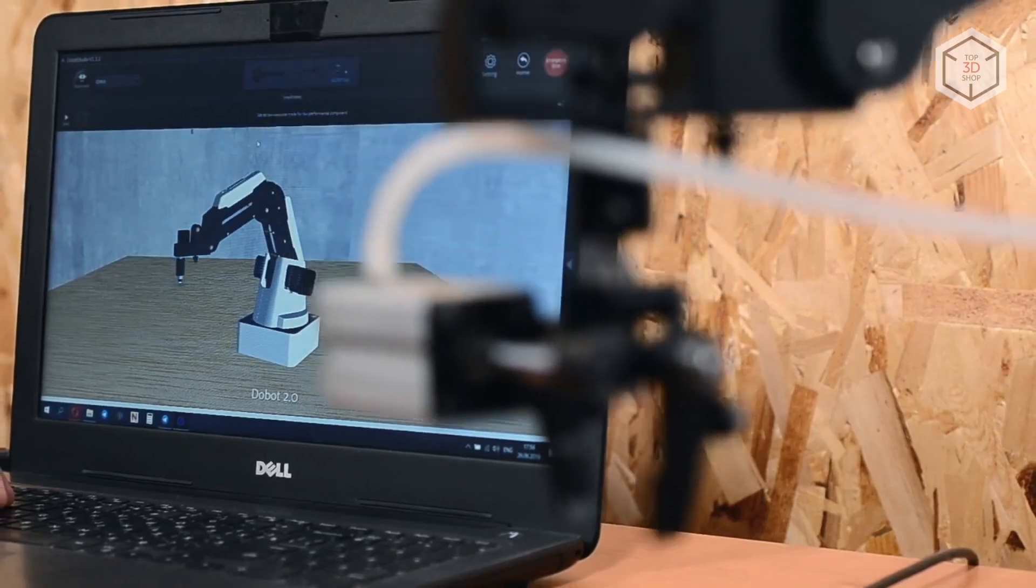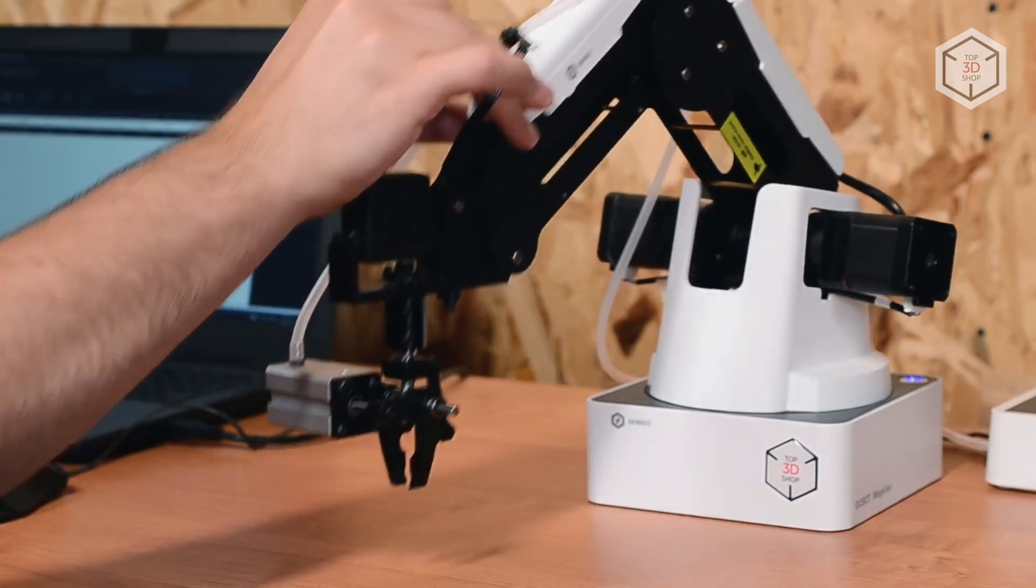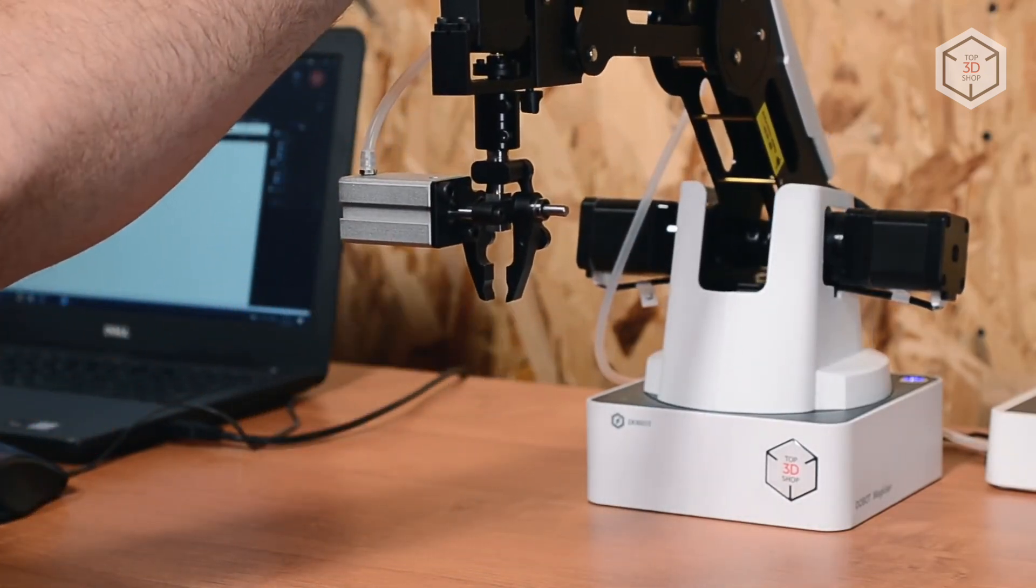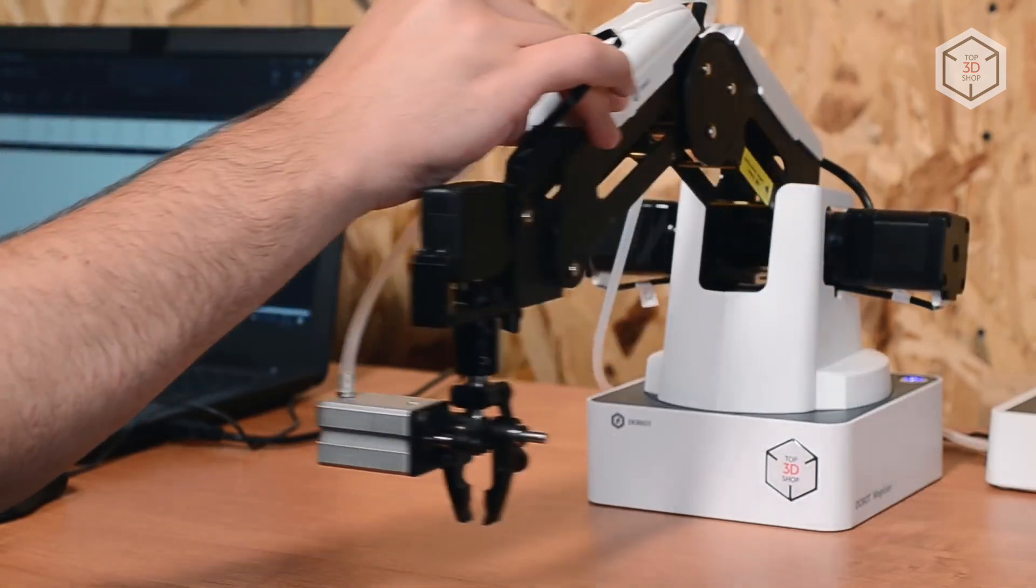The device can recognize voice commands and gestures. You can teach it by moving the robotic arm in space and fixing it in the end points. After the procedure is completed, the robot can repeat all the movements.